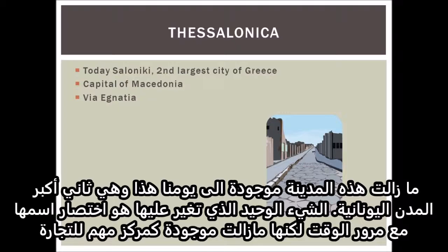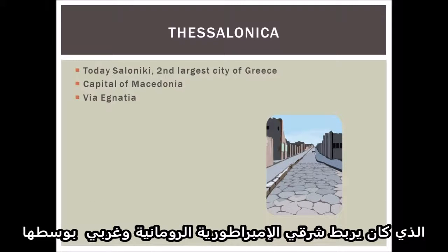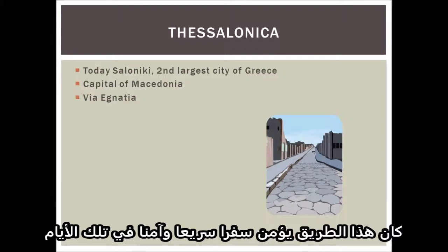The city still exists today. It's the second largest city of Greece — only its name has shortened a bit with time, but it's still there as a significant center of commerce. In Paul's days it also was a large, influential city. The Romans had made it the capital of Macedonia and it was located at the Via Ignatia, the Ignatian Way that connected the east of the Roman empire with the west. The road started at the Bosporus and cut through Macedonia, ending at the west coast of Greece just opposite Italy and Rome, enabling relatively fast and safe traveling.